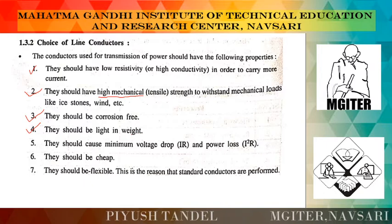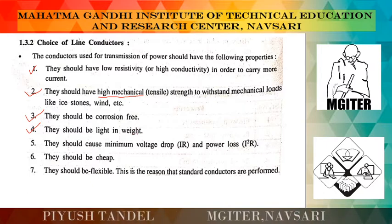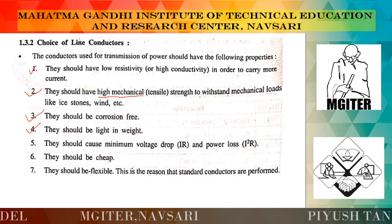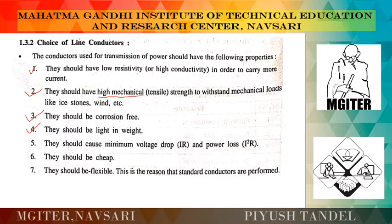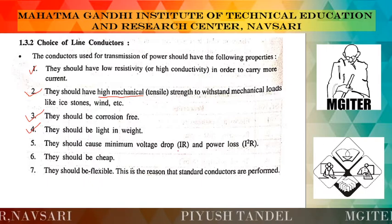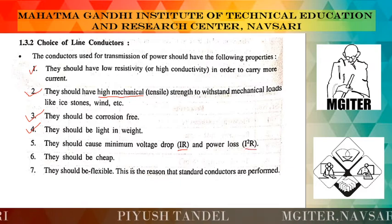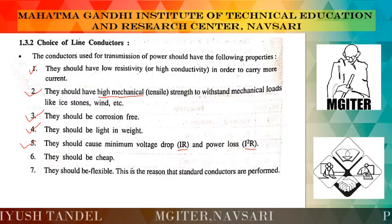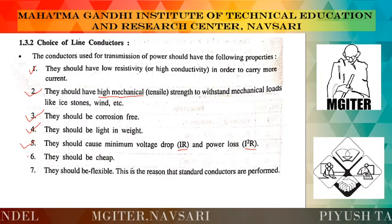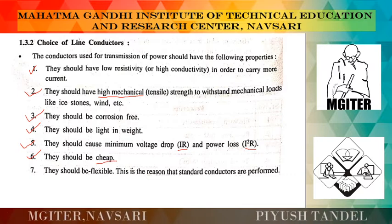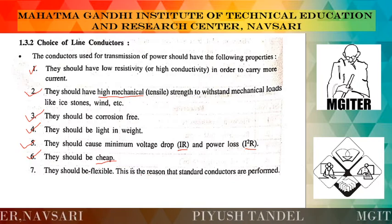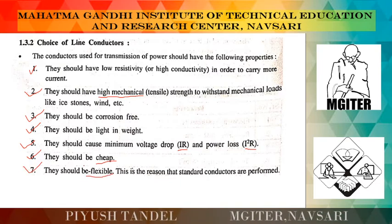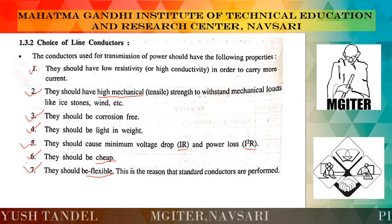Fourth, they should be light in weight, because if the weight of the conductor is light, the sag between the poles is also reduced and less mechanical strength is required. Fifth, they should cause minimum voltage drop — also called IR drop — and minimum power loss, that is I²R losses. Sixth, they should be cheap and economical to use. Seventh, they should be flexible, which is the reason that stranded conductors are preferred. These are the seven properties that a conductor needs.